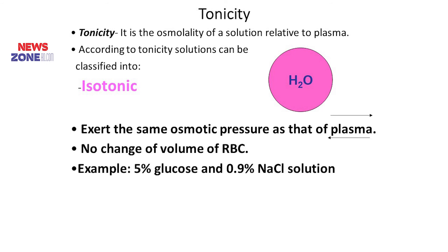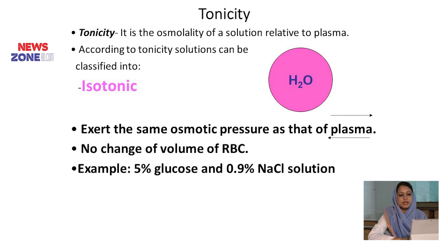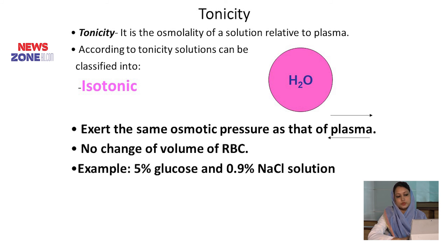Then, tonicity. What is tonicity? Tonicity depends on non-permeable osmotically active substances. It determines whether osmosis occurs or not. It is the osmolarity of a solution relative to the plasma. According to tonicity, solution can be classified into isotonic solution. Isotonic solution exerts the same osmotic pressure as that of the plasma.